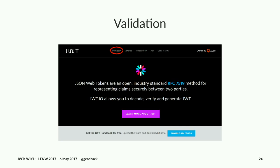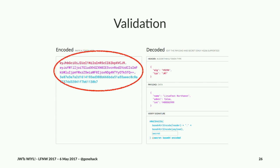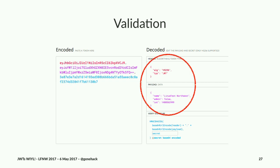JWT.io has some useful tools on it. One of those is a validator — if you go there and click that link, you end up on a validation screen where you can paste in any JSON Web Token and it'll decode it. If you have the secret, it'll also let you put it in and validate. This is a super useful tool when you're trying to get stuff to work initially. And there's the data we put into it.